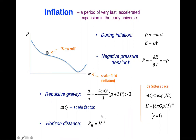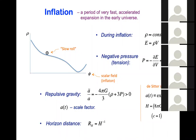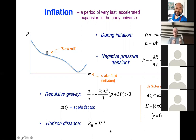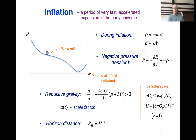De Sitter space has an important property: it has a horizon. The horizon distance is H-inverse, and it is typically a tiny microscopic distance. Its importance is that no communication is possible between points separated by distances greater than this horizon. If you have two observers in de Sitter space, they are driven apart by the expansion, and once their distance becomes greater than H-inverse, their communication stops.